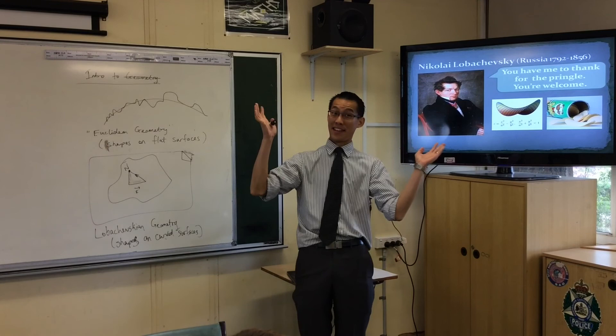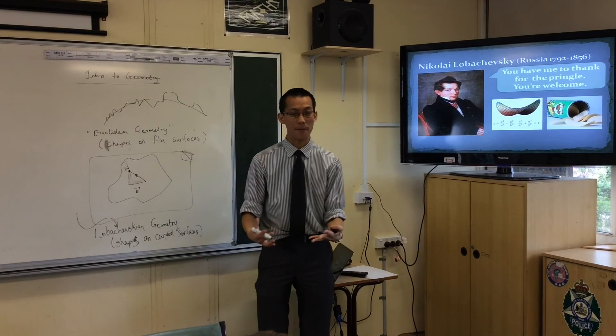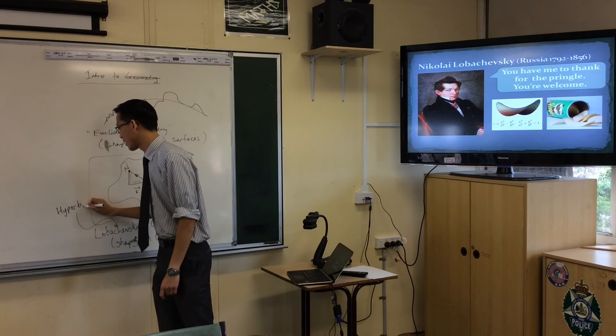The name Lobachevskyan geometry doesn't always stick — not everyone is happy with it, and you can probably guess why. So there's another name for it: hyperbolic geometry. That curved, saddle-like shape is a hyperbolic shape, and that's the name for that kind of curved object. This is what Lobachevsky's big idea was.